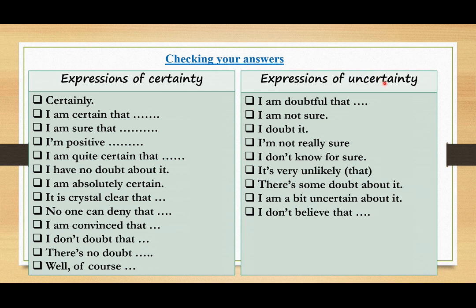Expressions of uncertainty: I'm doubtful that, I'm not sure, I doubt it, I don't know for sure, it's very unlikely that, there's some doubt about it, I'm a bit uncertain about it, and I don't believe that. So these are expressions of certainty and expressions of uncertainty.